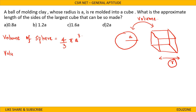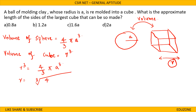Volume of cube with side R is R cube. Equating the two volumes: R cube equals 4 by 3 pi A cube. So R equals cube root of (4 by 3 pi A cube). Since cube root of A cube is A, this gives R equals A into cube root of (4 by 3 into pi). Using pi equals 22 by 7, that is A into cube root of (4 into 22 divided by 21).